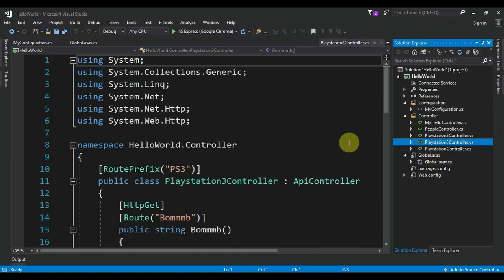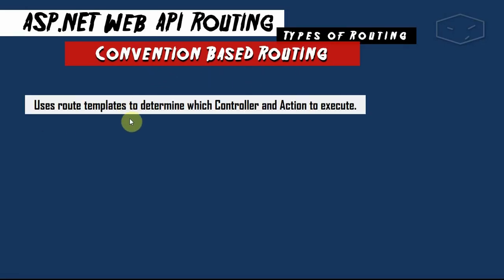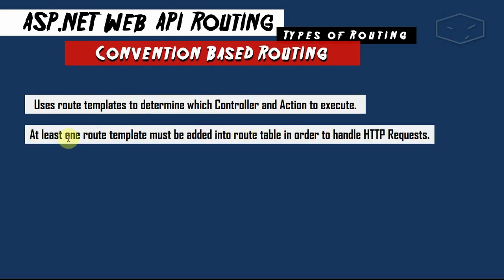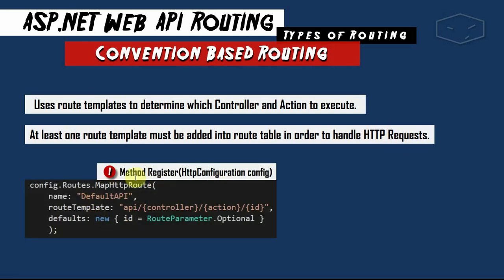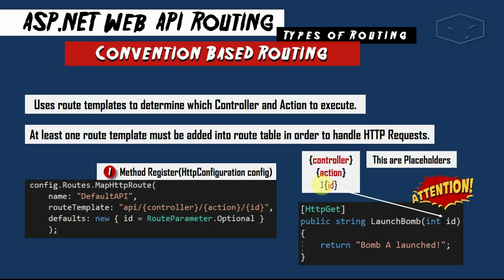Let's talk about convention-based routing. It uses templates to find the controller and the action to execute. At minimum, we must have one route to handle HTTP requests. As we saw before, we register a template with the name DefaultApi. The route template is api/{controller}/{action}/{id}, where id is optional. These are called placeholders. The controller and action are special placeholders; id is a regular parameter.